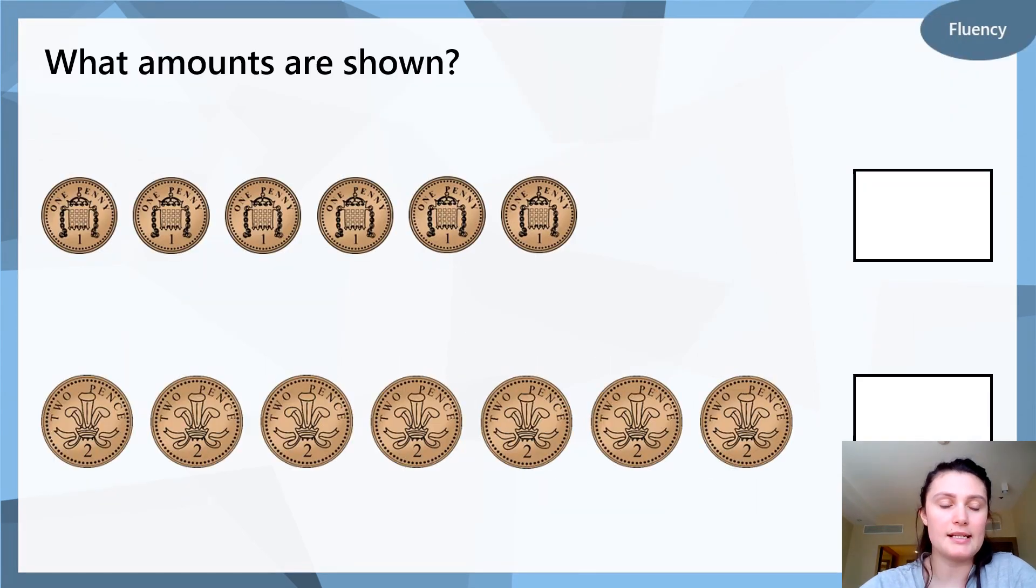Okay, so let's start by revising what amounts are shown here. So for the first one, they're all pennies. They're all one penny. So we can just count in ones. Are you ready? One, two, three, four, five, six. The answer is 6p. Very good.